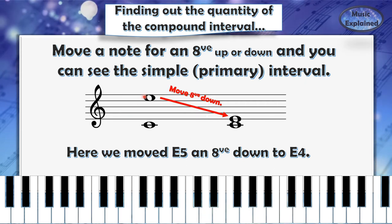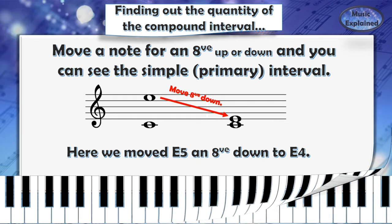So I move E5 to E4 and we get this interval right here, which is much easier to read than this one. We know that C4 and E4 are a major third. We found out that C4 and E4 form a major third.